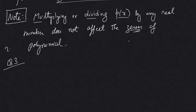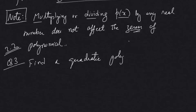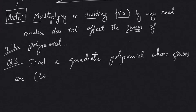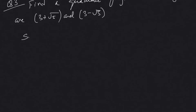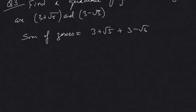Question number three from Exercise 2.2: Find a quadratic polynomial whose zeros are (3 + √5) and (3 − √5). Since the zeros are already given, let's find the sum of the zeros. Adding the two zeros: (3 + √5) + (3 − √5) — the √5 and −√5 cancel, and three plus three gives us six. So the sum of zeros is 6.